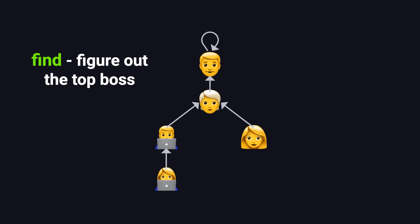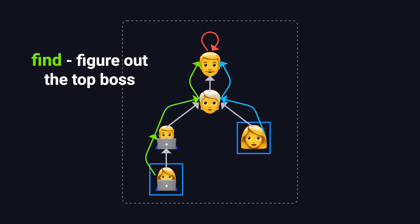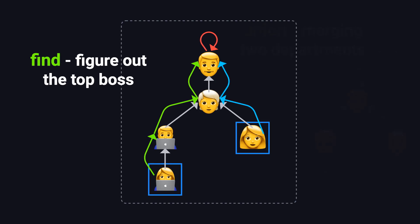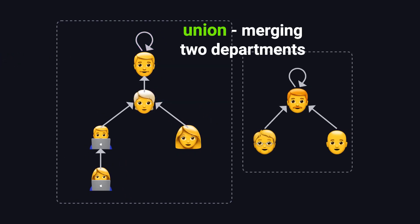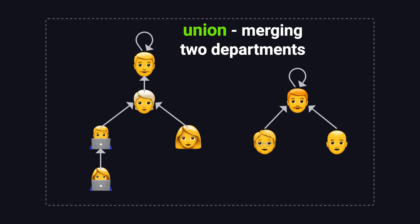Find is like an employee trying to figure out who the highest-level boss is in their chain of command. They keep following their direct managers upward until they reach someone who reports only to themselves. That person is the root node, representing the entire team or department. If two employees trace their way up and discover they have the same top boss, it means they belong to the same department. If not, they belong to different departments. And Union? That's like a company reorganization, where two departments merge and one of the existing top bosses becomes the new overall boss. From that point on, everyone from both departments will eventually report to this new boss.